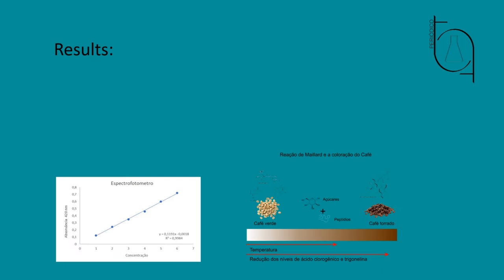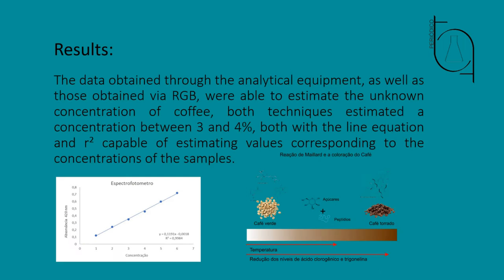Results. The data obtained through the analytical equipment, as well as those obtained via RGB, were able to estimate the unknown concentration of coffee. Both techniques estimated a concentration between 3 and 4 percent, both with the line equation and R-squared capable of estimating values corresponding to the concentrations of the samples.